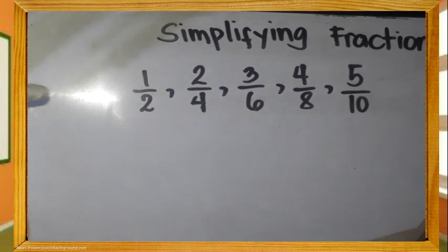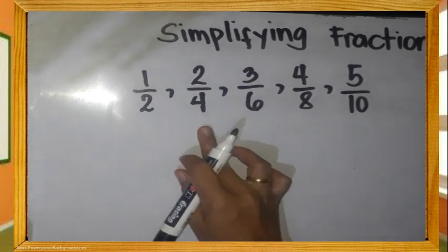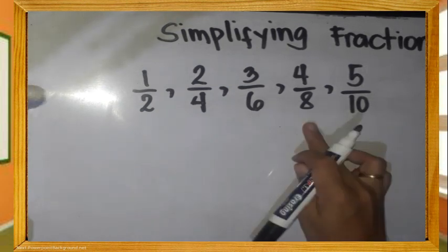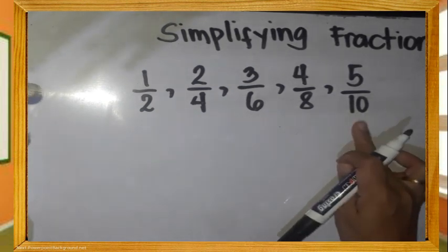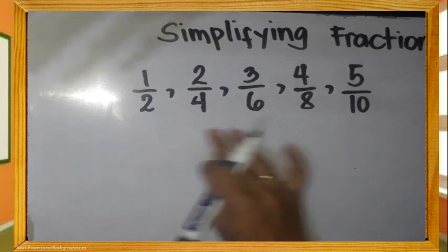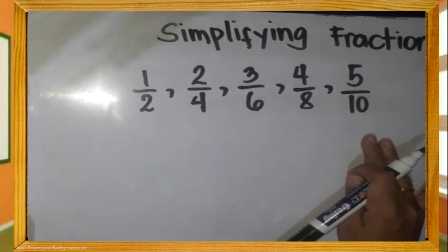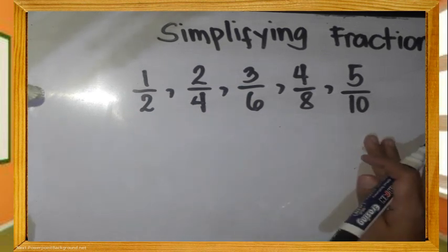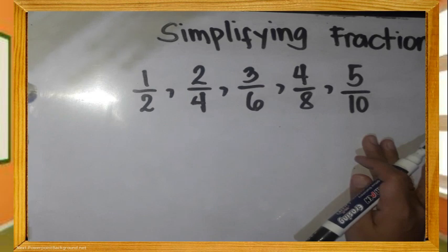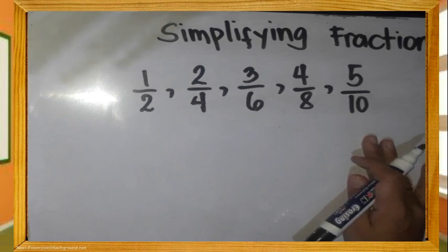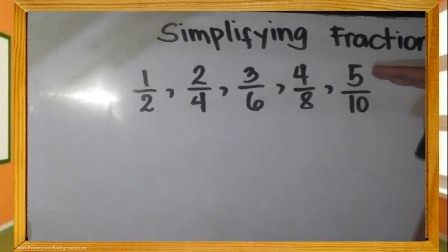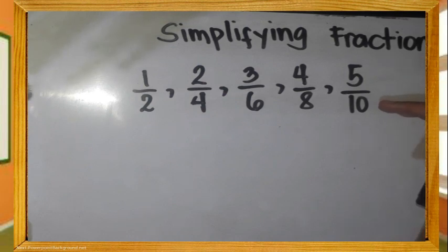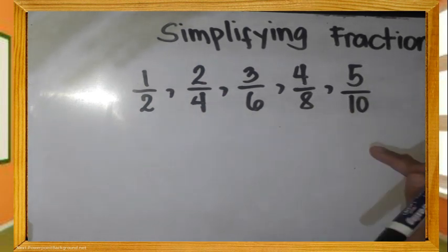Simplifying fractions. We have one-half, two-fourth, three-sixths, four-eighth, at five-tenths. Ang mga naritong numero ay example ng proper fraction. Bakit tinawag na proper fraction? Mas maliit ang nasa numerator kumpara sa denominator. Kaya sila ay proper fraction.